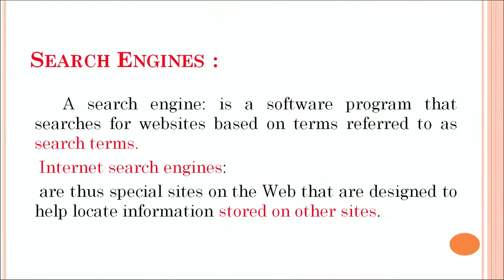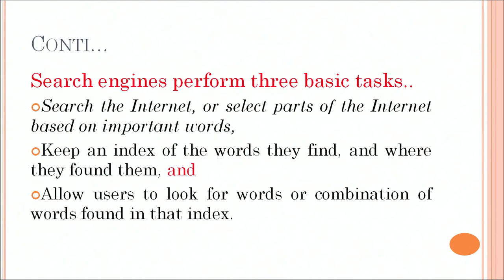What are basically the search engines? A search engine is a software program that searches for websites based on terms referred to as search terms. Internet search engines are special sites on the web designed to help us locate information stored on other sites. Search engines can perform three basic tasks: search the internet or select parts of the internet based on important words, keep an index of those words that they find and where they were found, and finally allow the user to look for words or combinations of words found in the index.